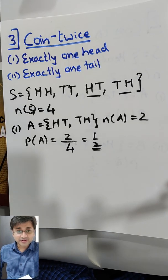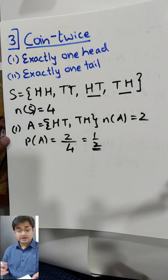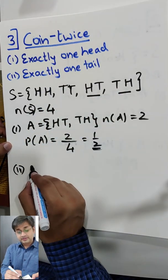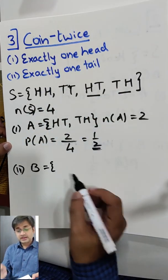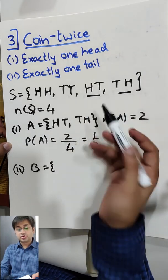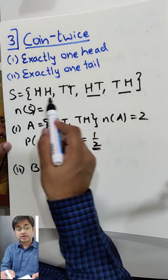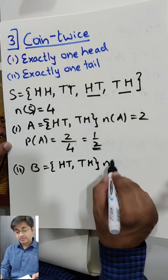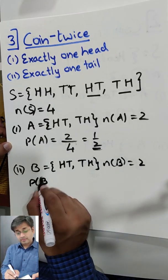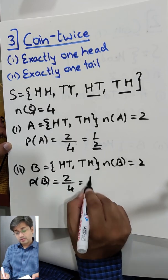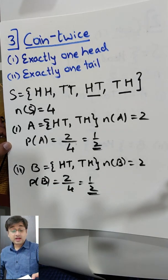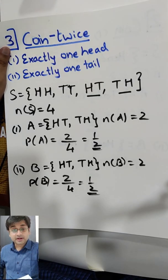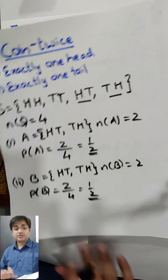How many of you are getting this on your own? If you are getting it, you are doing a brilliant job. Next: exactly one tail. Same logic. H-T and T-H are the two cases with exactly one tail. Number of B is 2. Probability of B is 2 by 4, which is also 1 by 2. Did you manage to get both parts correct?